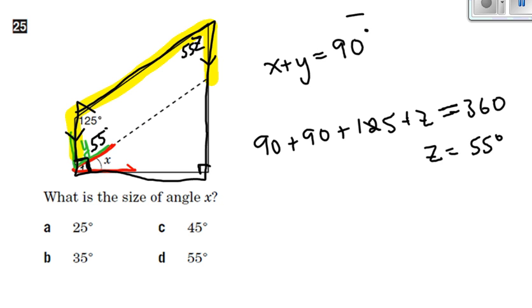Which means if I think about my original statement that the green angle and the red angle must be 90, then I can say that X plus 55 equals 90. And therefore, X equals 35 degrees.